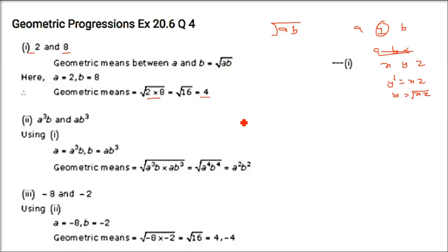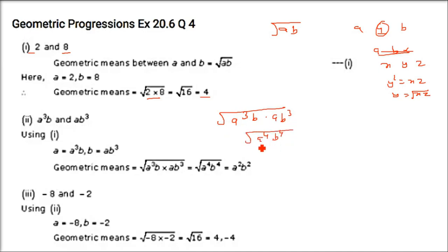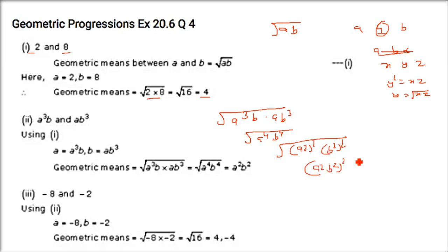For the geometric mean of A³B and AB³: G = √(A³B × AB³) = √(A⁴B⁴) = √((A²)² × (B²)²). When we take the root, the squares cancel and we get A²B².